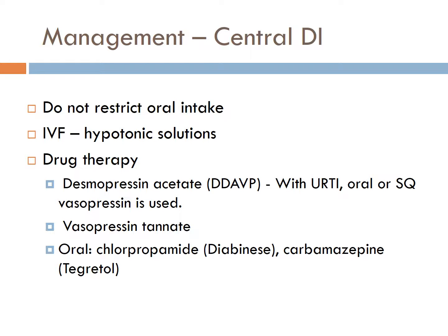Vasopressin tannate is given subcutaneously and can cause abscesses and lipodystrophy at the injection site due to changes in subcutaneous fat. Rotate injection sites, and vasopressin tannate is contraindicated if the patient is allergic to peanuts. Chlorpropamide and carbamazepine are thought to potentiate the action of ADH and help decrease the thirst response associated with DI.